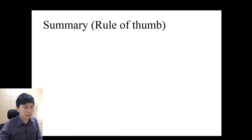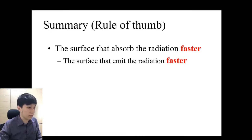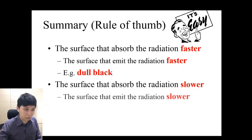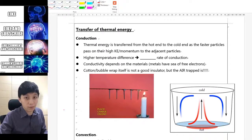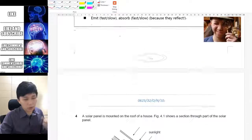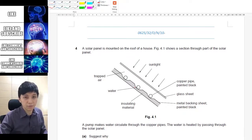To conclude, as a rule of thumb: the surface that absorbs radiation fastest also emits fastest — that is dull black. The surface that absorbs slowly also emits slowly — that is shiny silver. That's all for the recap from junior science. In the next video we'll put down key information about conduction, convection, and radiation, and also see how IGCSE may ask you in the exam on these three heat transfer methods.